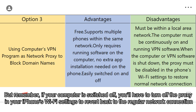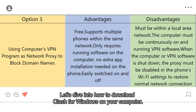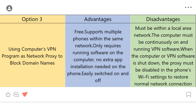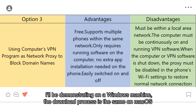But remember, if your computer is switched off, you'll have to turn off the proxy in your iPhone's Wi-Fi settings to revert back to the regular network connection. Let's dive into how to download Clash for Windows on your computer. I'll be demonstrating on a Windows machine; the download process is the same on Mac OS.